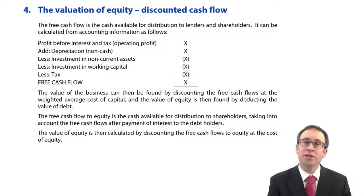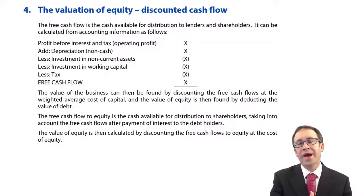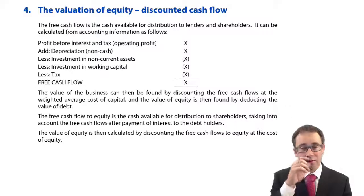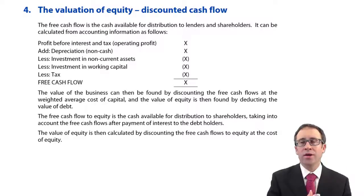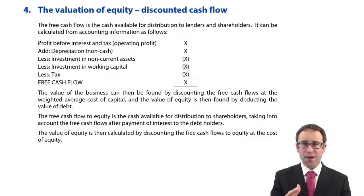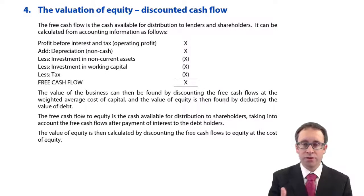Having gone through in the previous sessions and looked at the dividend valuation model to value our equity — first with constant dividends, then with dividends growing at a constant annual rate — we're now going to move things on slightly. Still thinking about discounting back to present value to work out the value of equity, but instead of looking at dividends we're going to look at the cash flows that the entity generates, and by discounting those cash flows back to present value we can work out the value of equity. It's a similar process but from a different perspective.